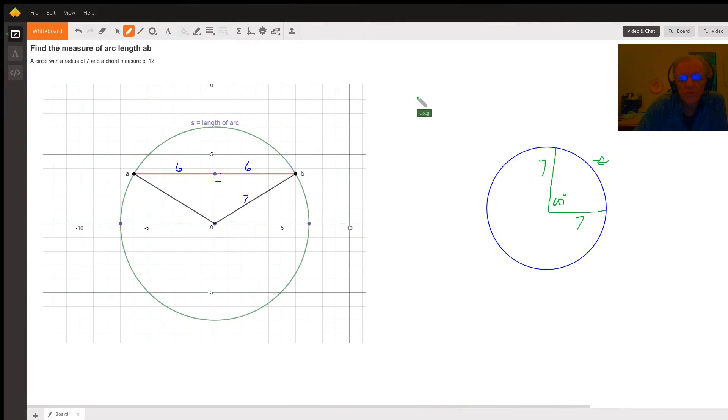Just make sure that you understand how to find the arc length that is subtended by a central angle of, let's say, 60 degrees in a circle of radius 7, because that's going to be applicable to this particular problem where you're given the radius of a circle and a chord length.